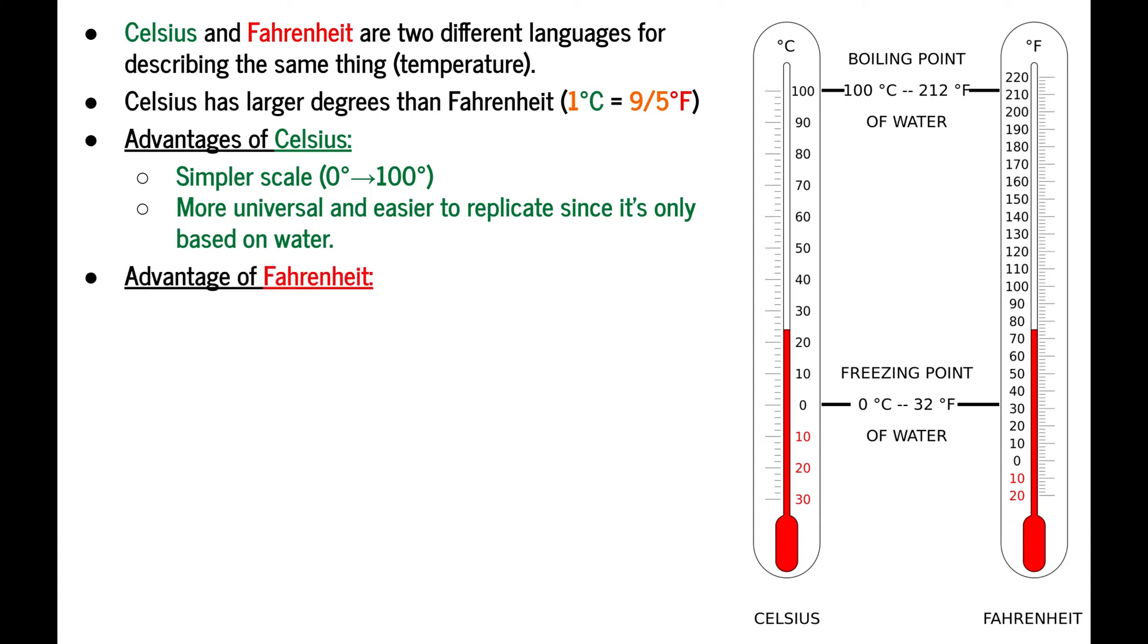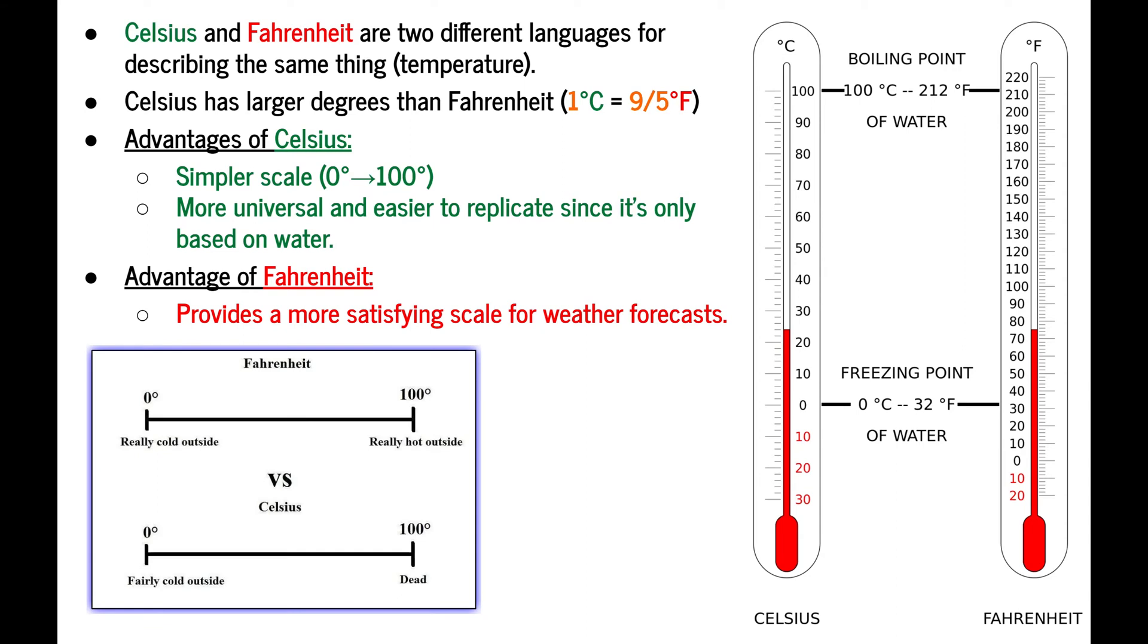There is however one advantage that Fahrenheit has over Celsius. It provides a more satisfying scale for making weather forecasts. Here's an image pulled off the internet which demonstrates this. If you go outside and it's 0 degrees Fahrenheit, it's really cold, so you should probably wear a winter jacket. But if it's 100 degrees outside, then it's really hot and you'll probably wear shorts and a t-shirt. Whereas if you're in Celsius, 0 degrees means it's kind of chilly and 100 degrees outside means you're going to die because it's boiling outside. So Fahrenheit works a little bit better when you're talking about weather specifically.